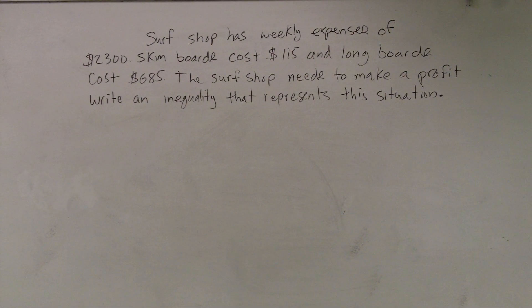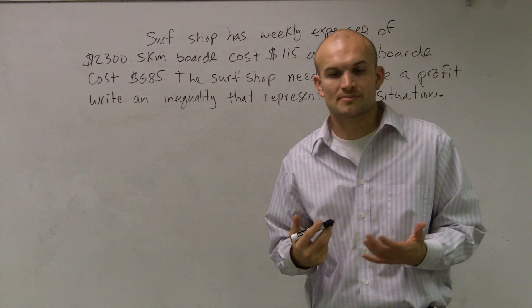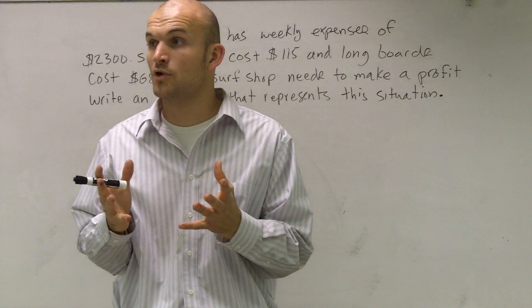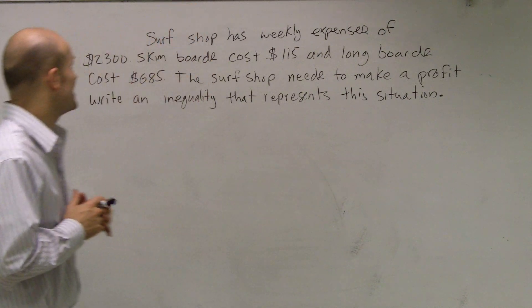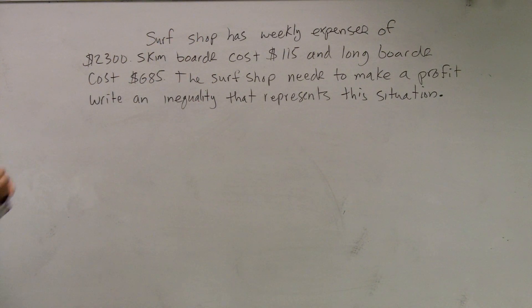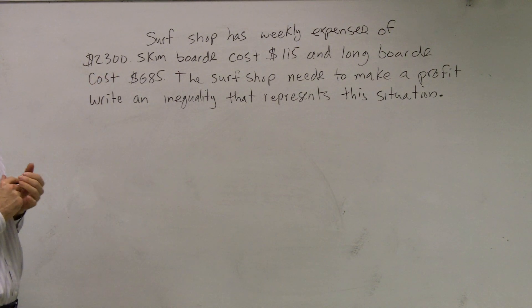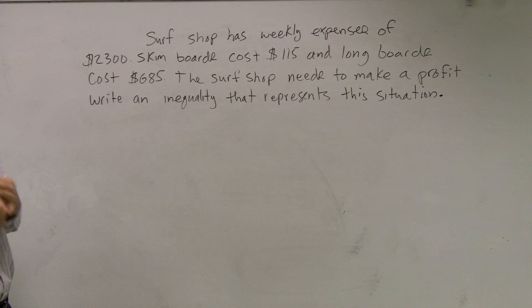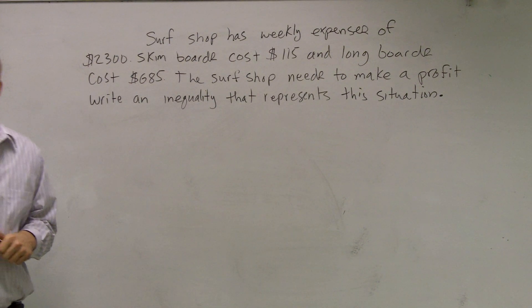Let me show you guys how to set this up. I'm not going to spend time actually solving it, but I do want to show you guys how to represent the inequality, because that's all it's really asking us to do. For this prompt, it says a surf shop has weekly expenses of $22,300. Skim boards cost $115, and long boards cost $685. The surf shop needs to make a profit — write an inequality that represents the situation.